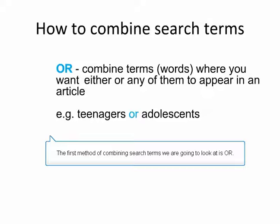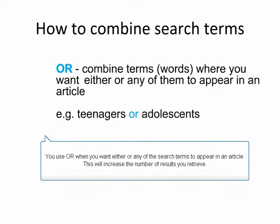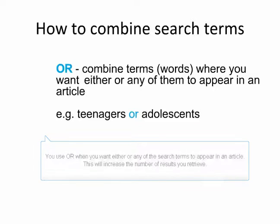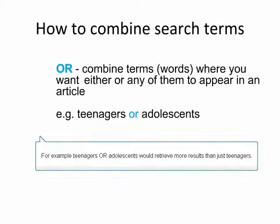The first method of combining search terms we are going to look at is OR. You use OR when you want either or any of the search terms to appear in an article. This will increase the number of results you retrieve. For example, teenagers OR adolescents would retrieve more results than just teenagers.